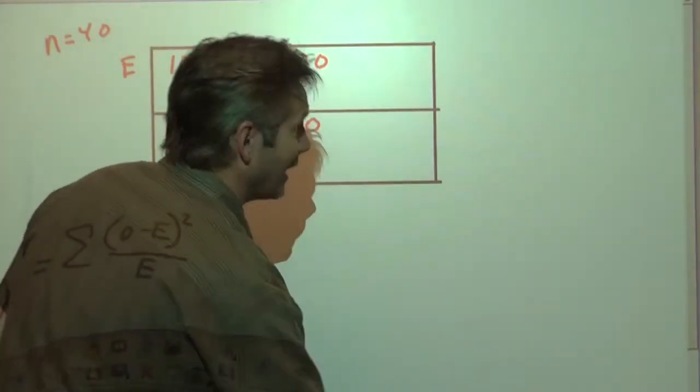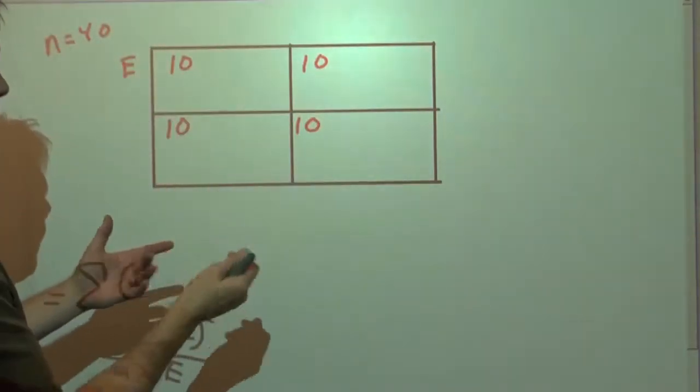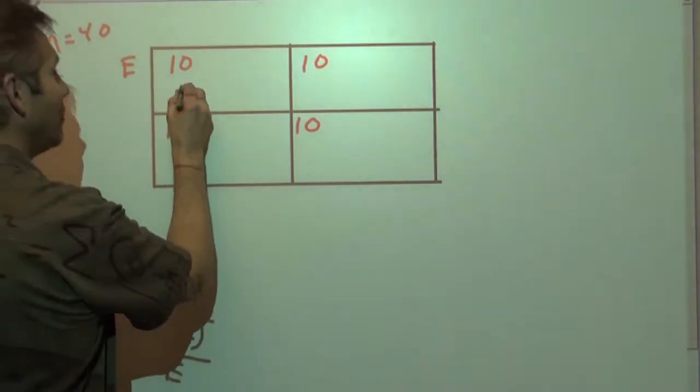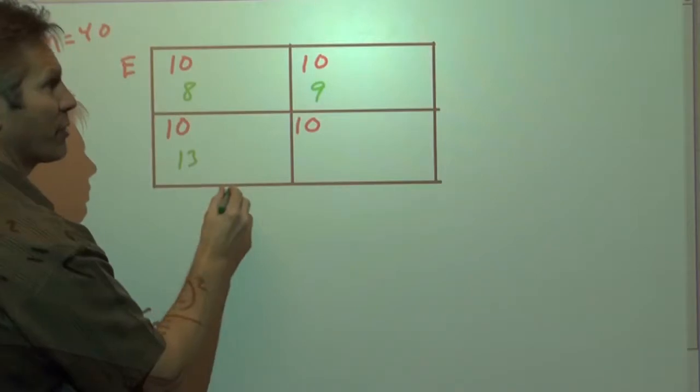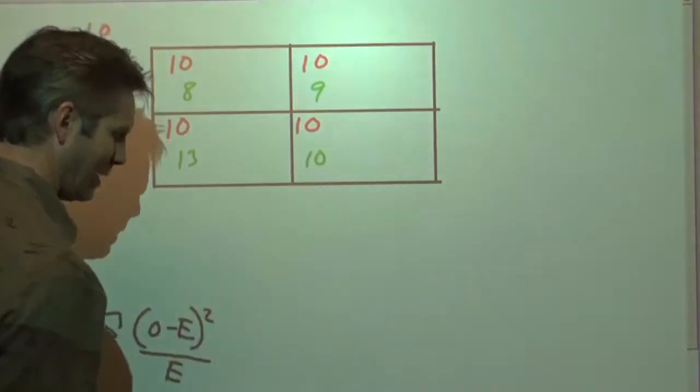But what if we actually take a sample of 40, and we keep track of how often they end up in each cell? Maybe in this cell it ended up 8 times, 9 times here, 13 times here, and 10 times here.